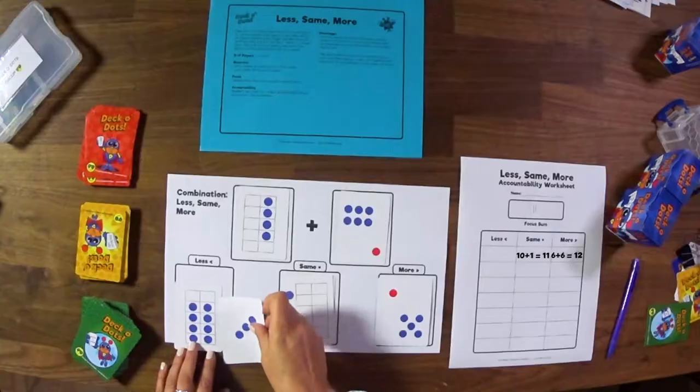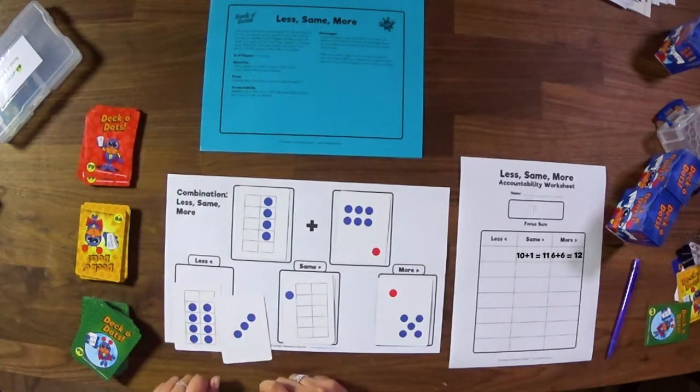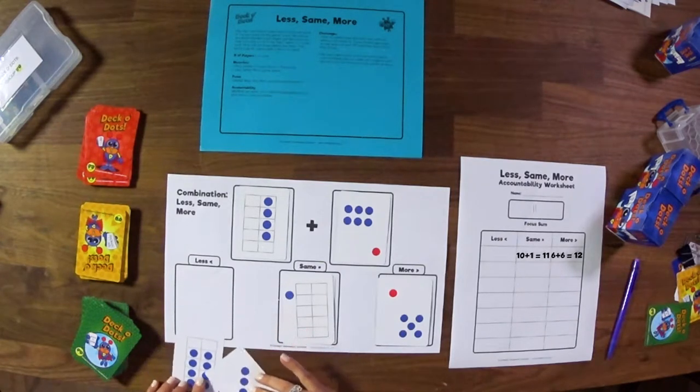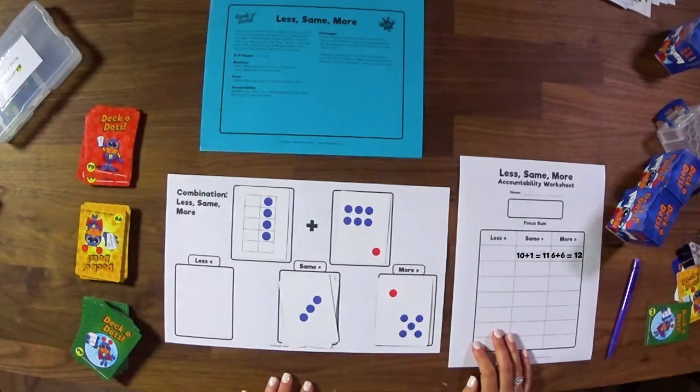Last one here, as we look at this, I know that if I put these two in the frame, it's going to total 10 plus 1 more makes it 11. So we have another sum that is the same. So kids can continue recording on the accountability sheet.